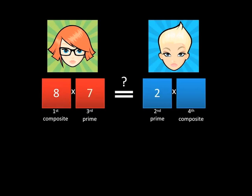The blue team then chooses a composite number. The blue team wins if they can make the two sides of this equation equal. So what composite number should they choose? They should choose 28. Blue has won. If blue cannot make those two sides equal, then red wins.